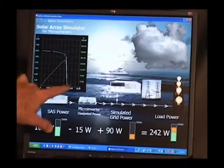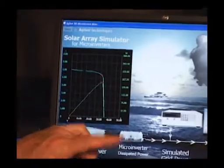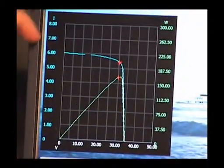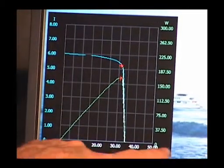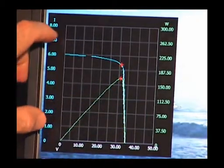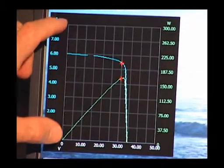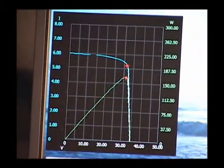The graph here shows the output of the solar array simulator which would normally be the output of a solar panel. On the left side is current, the horizontal axis is voltage. So this blue curve is the IV curve and the green one is the power curve. It shows power versus voltage.